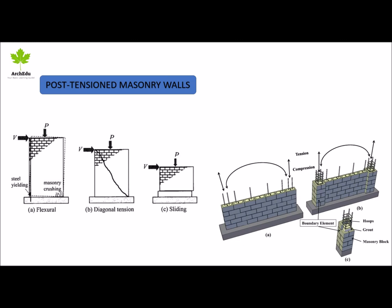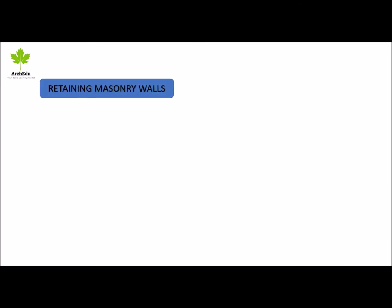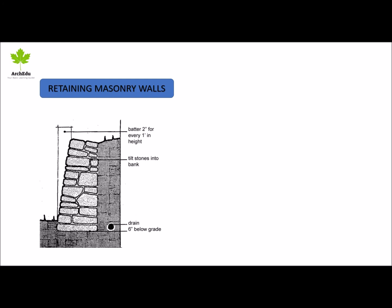Post-tensioned masonry walls: in post-tensioned construction, hollow concrete masonry units are laid conventionally and pre-stressing tendons are either placed in the concrete masonry cells or in the cavity between multiple leaves. Pre-stressing tendons are either installed during wall construction or access ports are left in the walls so the tendons can be slipped in after the walls are completed.